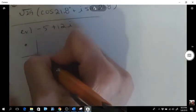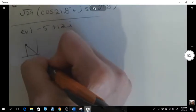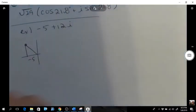It's in quadrant 2 because the negative 5 is the real part, and that is the imaginary part.